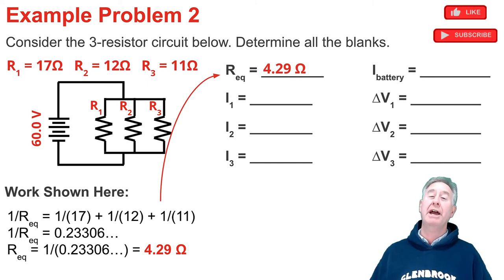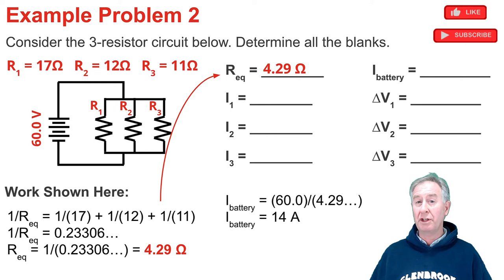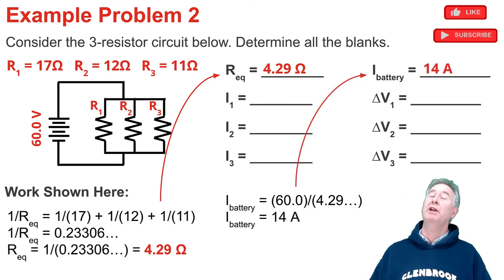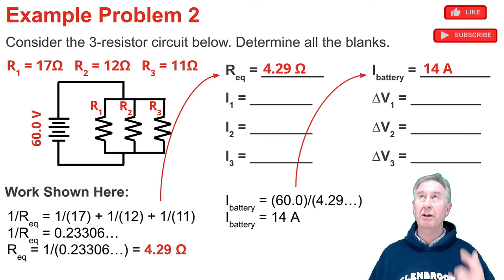Now I'm going to calculate the current in the battery. I do that by going the voltage of the battery divided by the total resistance or equivalent resistance. That's 60 divided by 4.29 and some change. That comes out to be 14 amps. I put it in the blank.